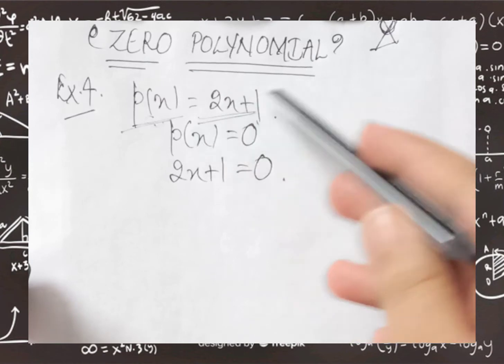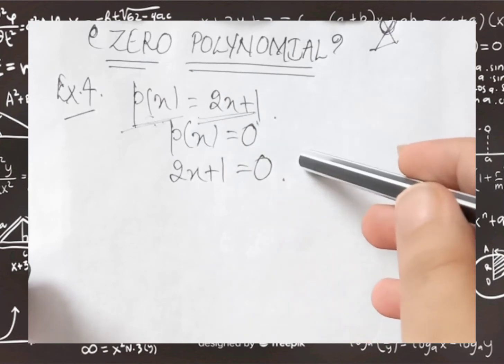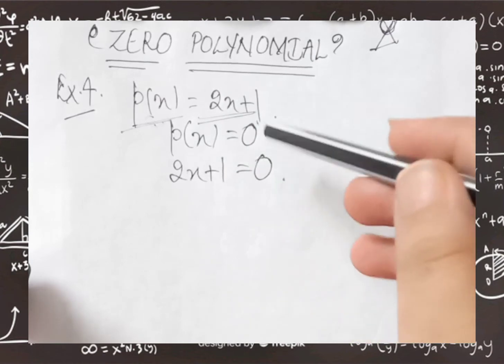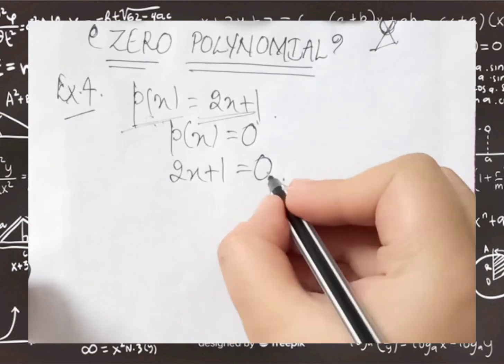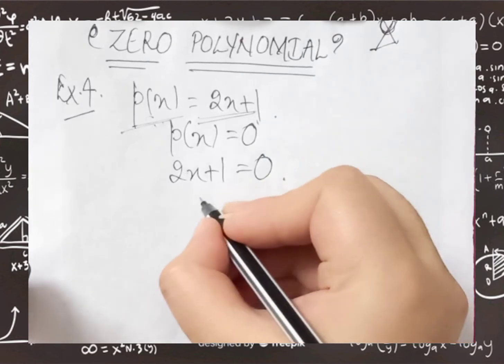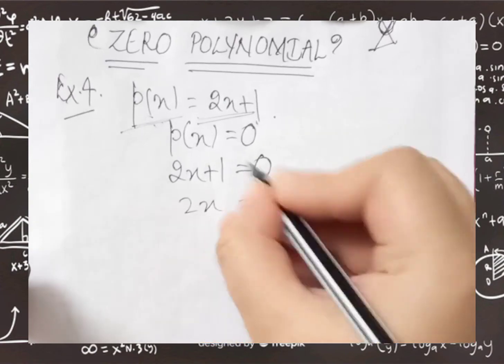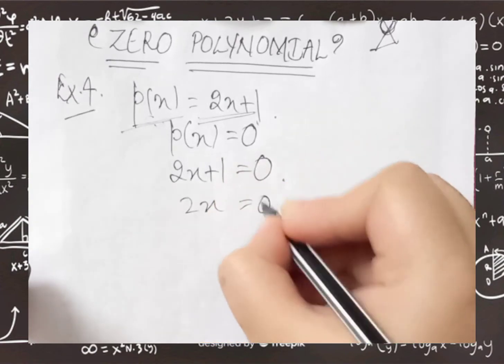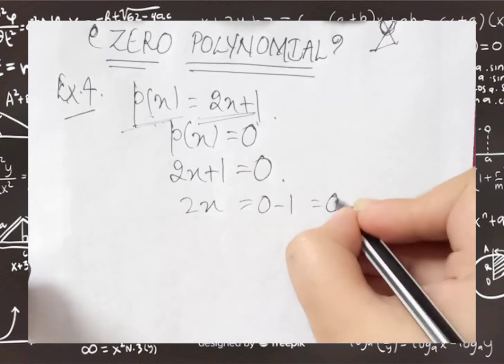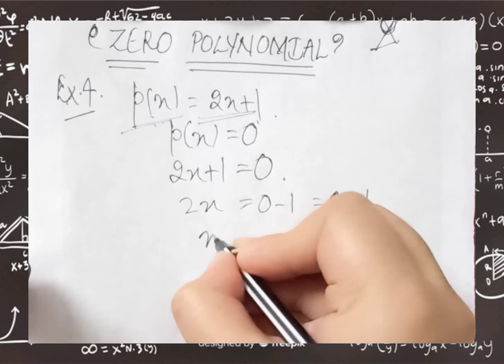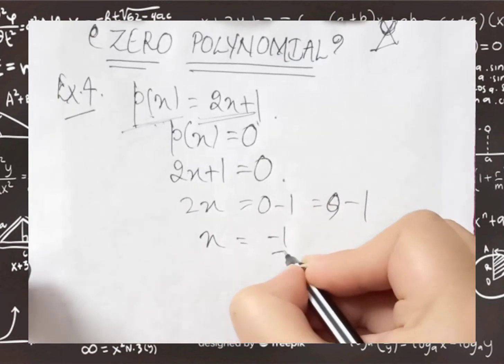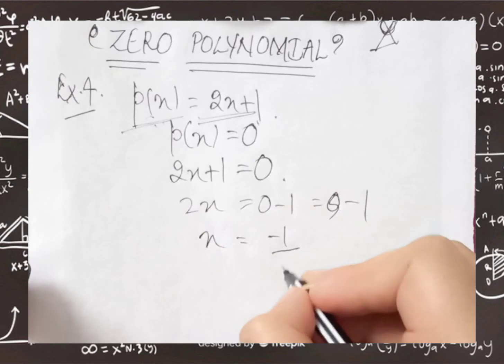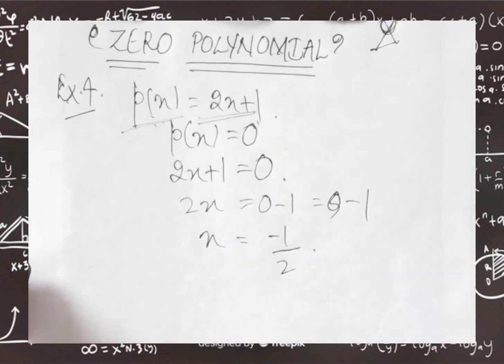Means we keep the answer to this 2x plus 1 equal to 0. So, if we have 2x plus 1 equals 0, then 2x equals 0 minus 1, which is minus 1. Now, x equals minus 1 divided by 2. So, this is minus 1 upon 2.